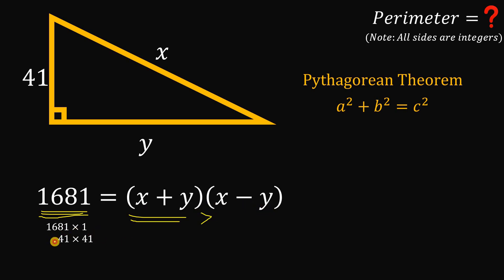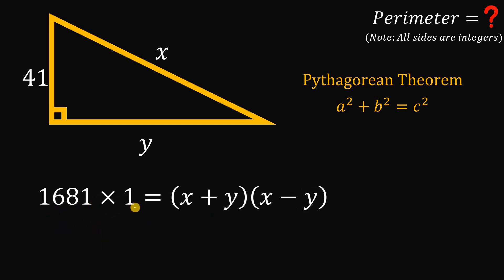Therefore this factor 41 times 41 is not possible because we want two different factors. Therefore the only possible factors we can use is 1681 times 1. Now it follows that 1681 must equal x + y and 1 must equal x - y.